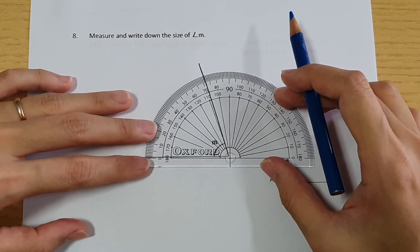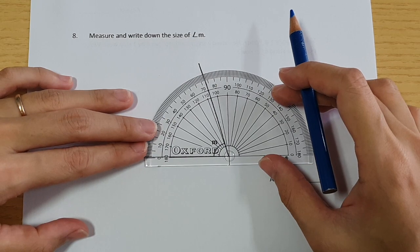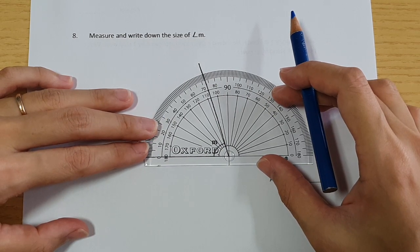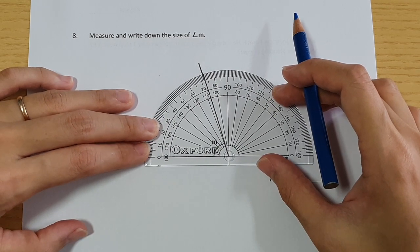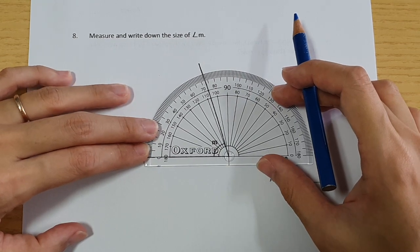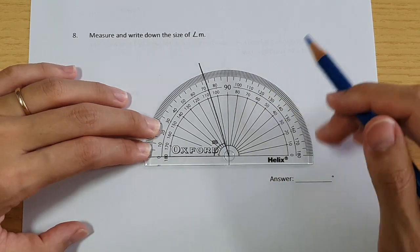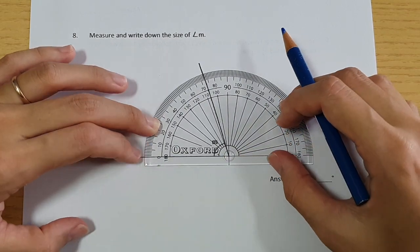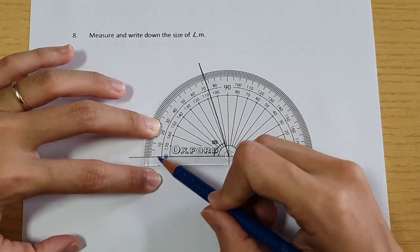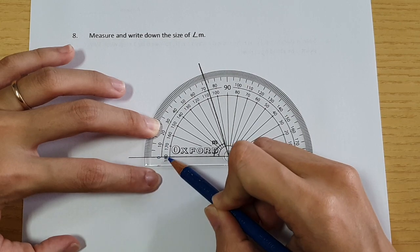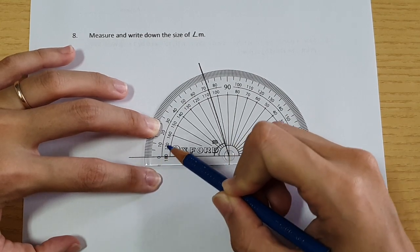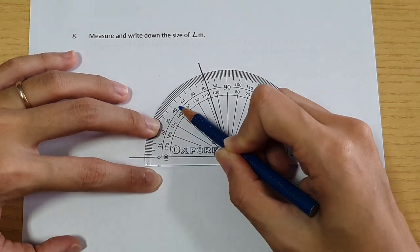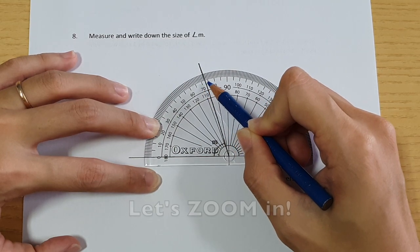Put the cross right at the sharp point. And then make sure your line is straight on top of the line that is drawn. Start counting from the zero on top of the line. So it's this zero. And go all the way until this.